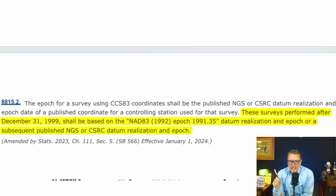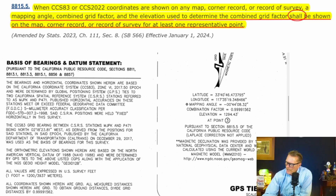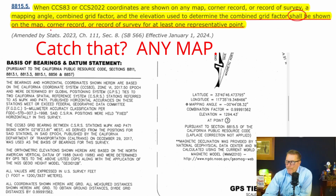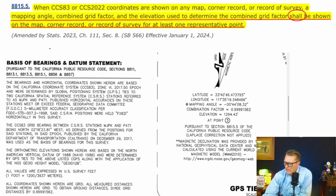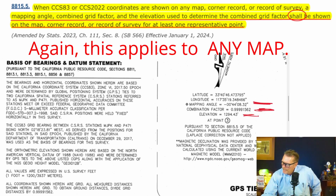If you're using real-time EPICS, you're messing up. Take a look at the law here — 8815.2 — and it says the EPIC for a survey using CCS 83 coordinates shall be published by NGS or CSRC. The last published EPIC is 2017.5. There are several other EPICS that were published that you could be using, but you better not be using real-time EPICS. When you're using coordinates shown on any map, corner record, or record of survey, a mapping angle, a combined scale factor, and the elevation used to determine the combined grid factor shall be shown on the map, corner record, or record of survey for at least one representative point. Your map has to show the mapping angle, the combination factor, the elevation, and the point that that was taken from.